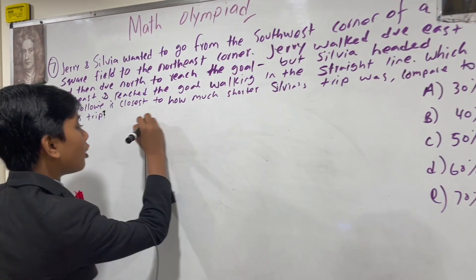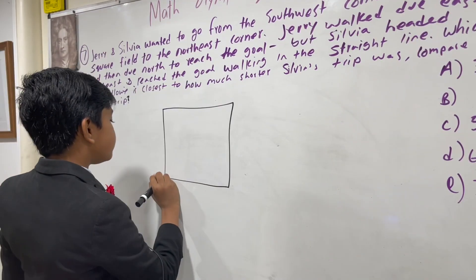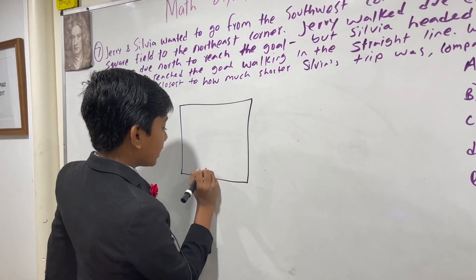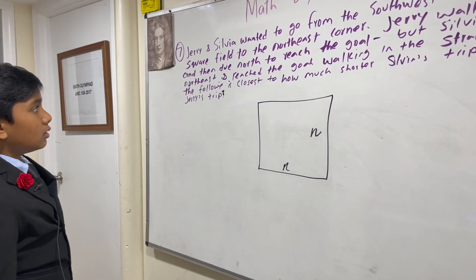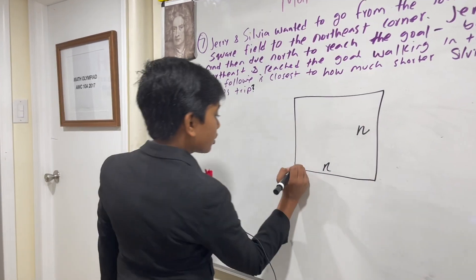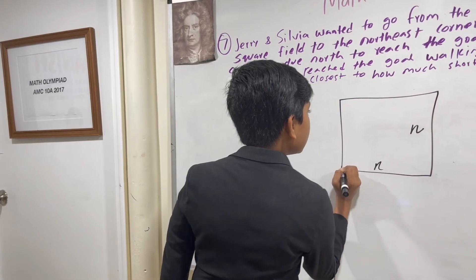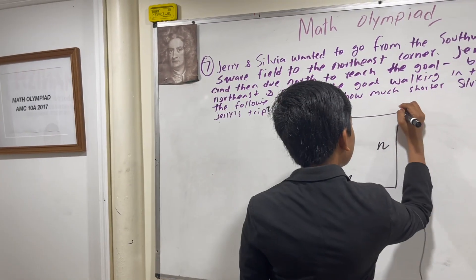Let's draw our square field and let's say it has side length N. The southwest corner would be here, and then northeast would be here.